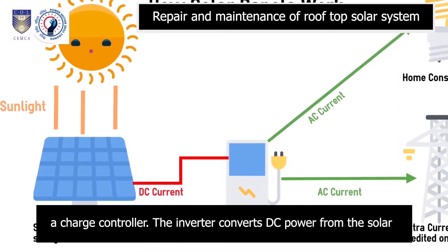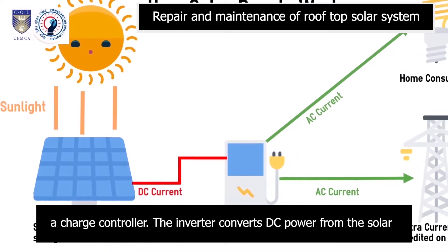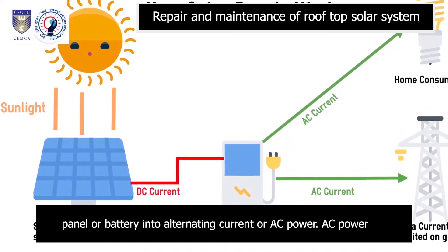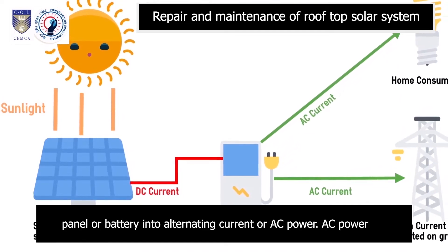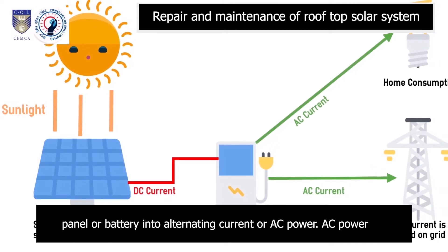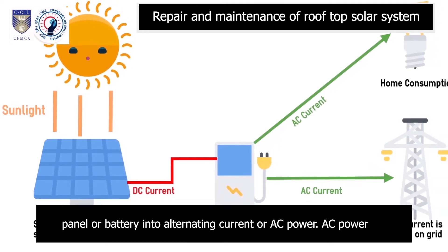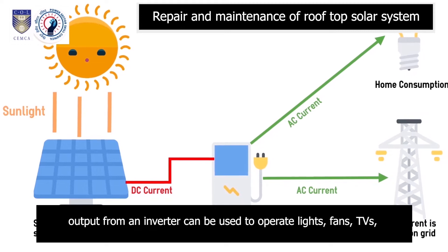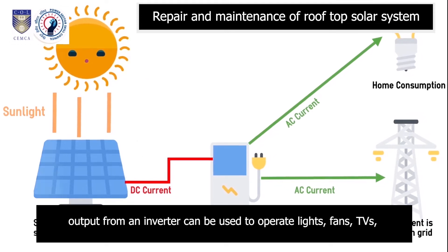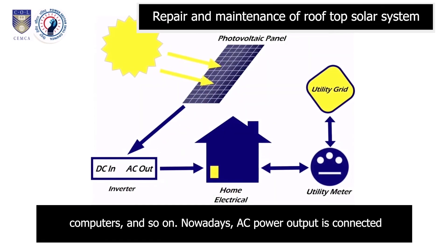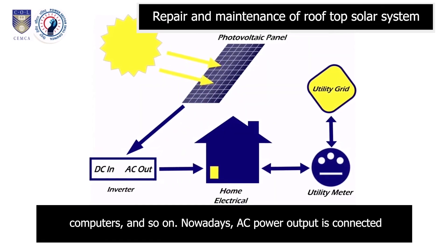The solar panel converts sunlight into direct current (DC) electricity. This DC electricity is used to charge a battery through a charge controller. The inverter converts DC power from the solar panel or battery into alternating current (AC) power. AC power output from an inverter can be used to operate lights, fans, TVs, computers and so on.